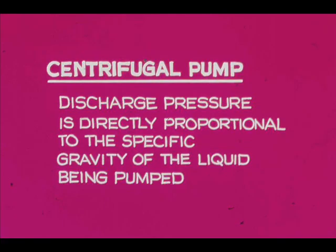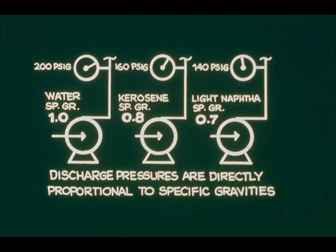To repeat, the discharge pressure of a centrifugal pump is directly proportional to the specific gravity of the liquid being pumped. When the discharge pressure for water, specific gravity 1.0, is 200 psig; for kerosene, specific gravity 0.8, it is 160 psig; and for light naphtha, specific gravity 0.7, it is 140 psig.